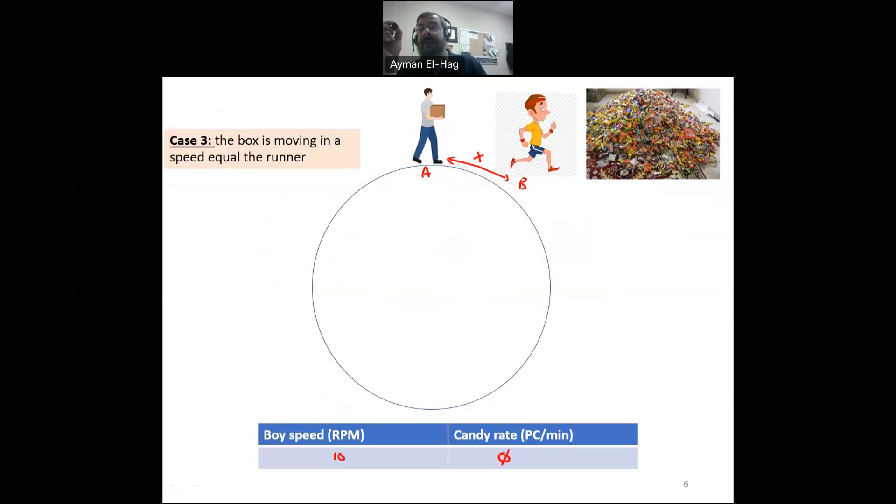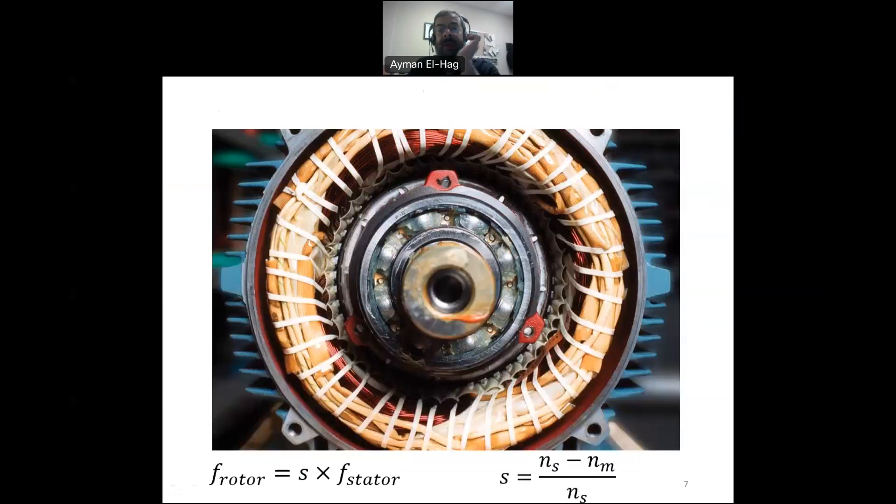And this is why we said that the induction machine, the rotor cannot run at the synchronous speed. Otherwise, the induction or the induced voltage will be zero, will have no frequency. It will be exactly zero. And hence, there will be no way to have any induced voltage in the rotor. This is why the rotor is always less than. And the rate of it will be proportional to the difference in the speed of the runner and the man behind him.